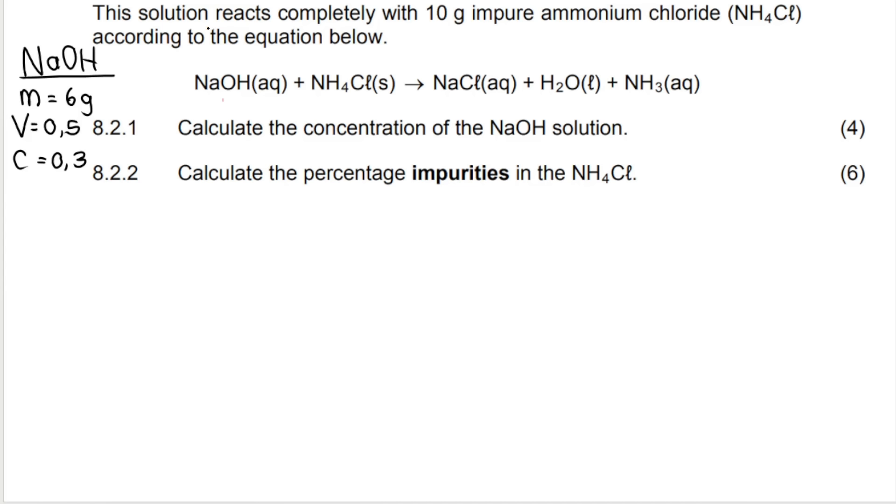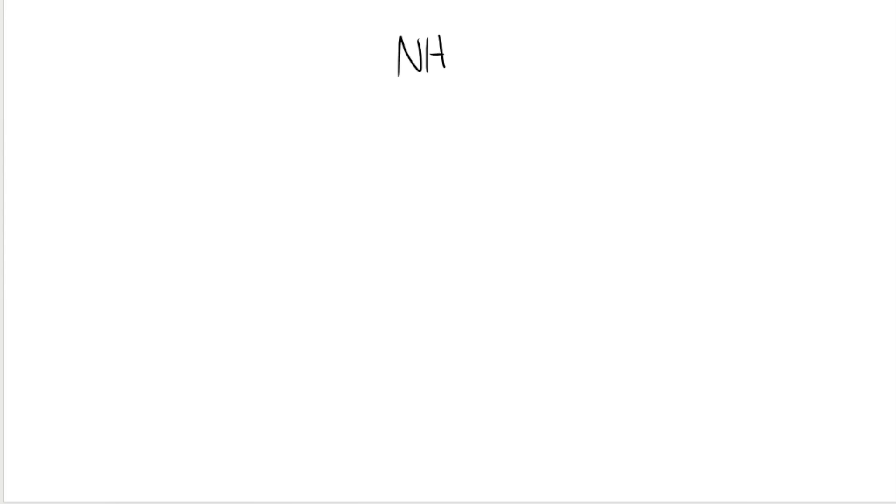That solution reacts completely with 10 grams impure ammonium chloride. They want to know the percentage purities in the ammonium chloride. Now, just to recap or to refresh your memory, I hope you remember that when we say that a substance is impure, like here, 10 grams of impure ammonium chloride, what that means is that NH4Cl, not all of that 10 grams is pure. This is called impure.